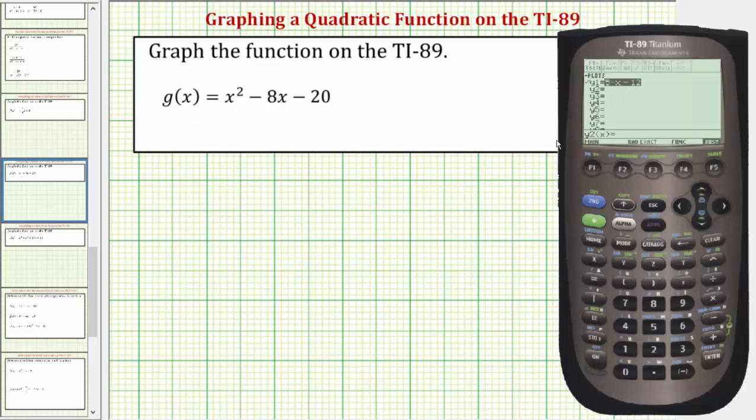Let's enter the function in y1. So we'll press the up arrow, clear the old function, and enter the new function. We'll enter x raised to the power of two minus eight x minus 20. Enter.